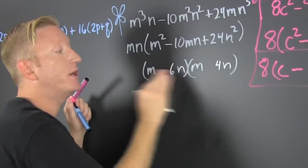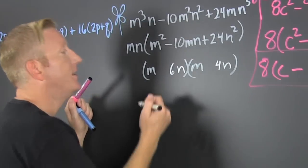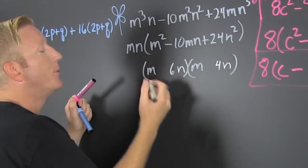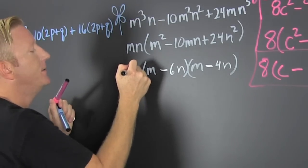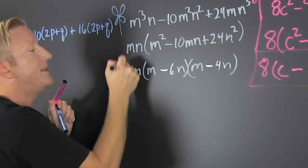Now the signs are the same and they're both negative, negative, negative. What do I do with that MN? I bring it down.